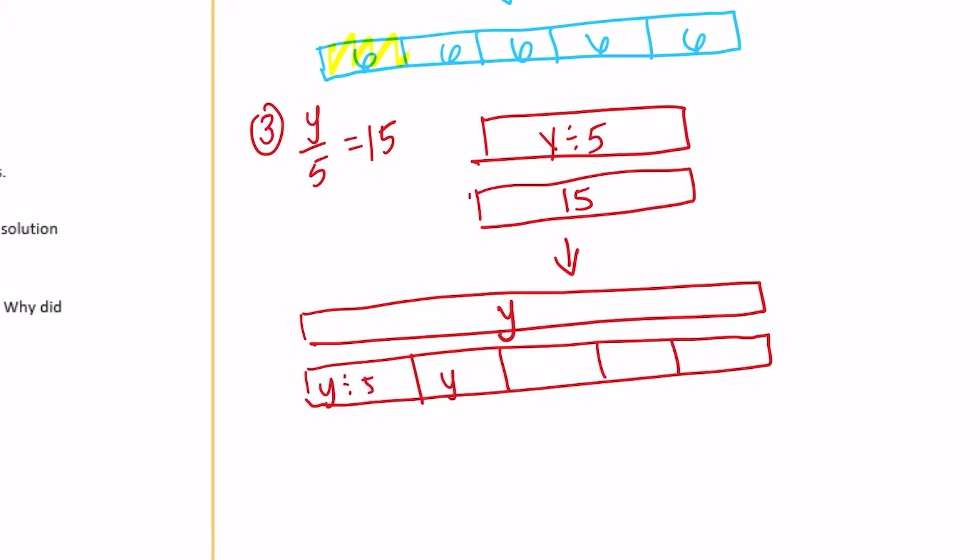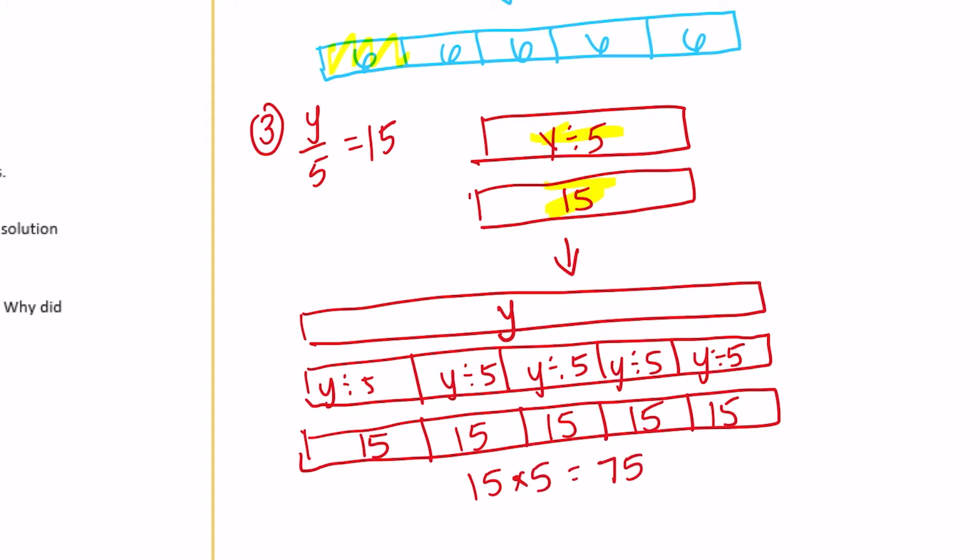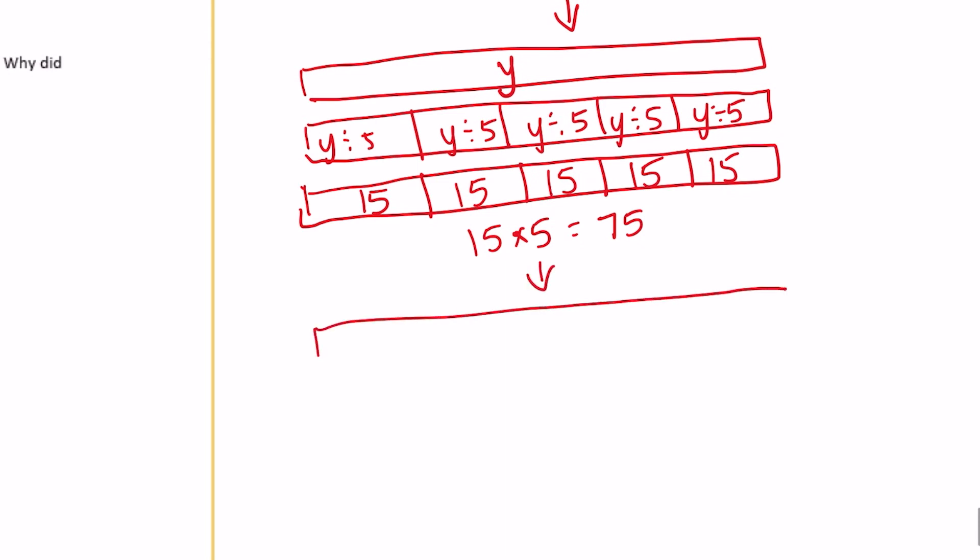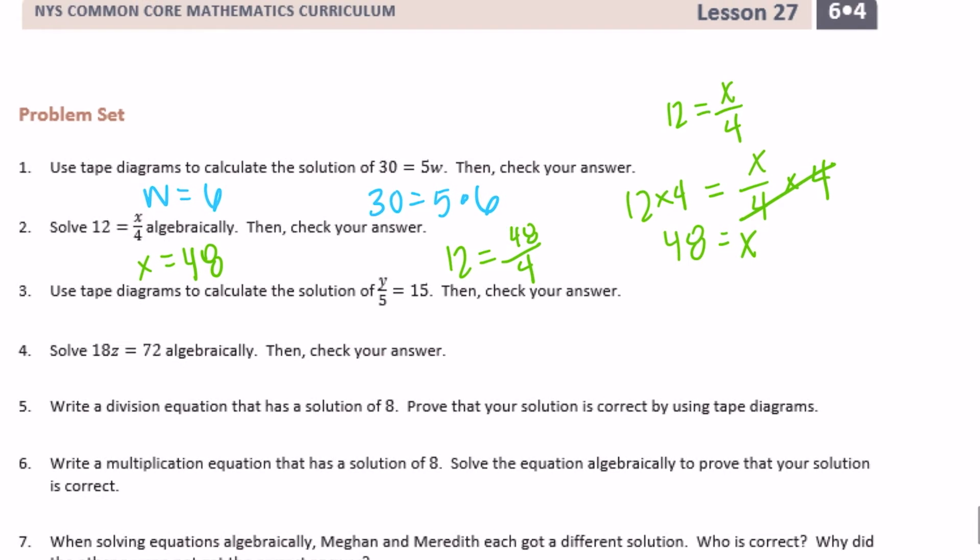So y divided by 5, y divided by 5, y divided by 5, and then one more. So we know that each y divided by 5 is, up here it said y divided by 5 is equal to 15. So each one of these pieces is 15. So that means that y is this whole, which would be 15 times 5, which is equal to 75. So y is equal to 75. And we can check, is 75 divided by 5 equal to 15? That is true.